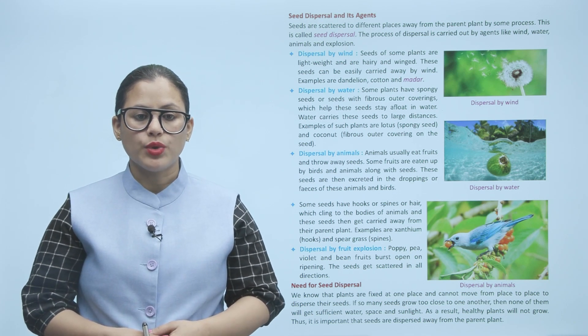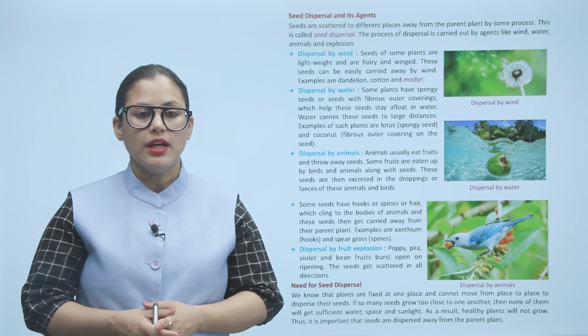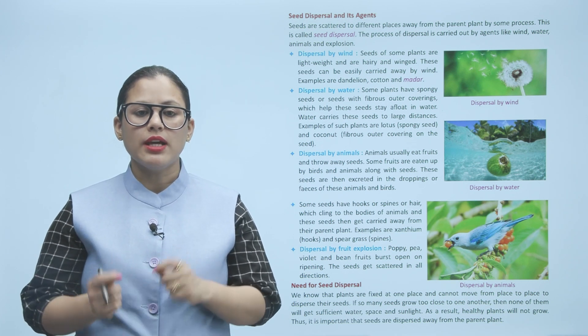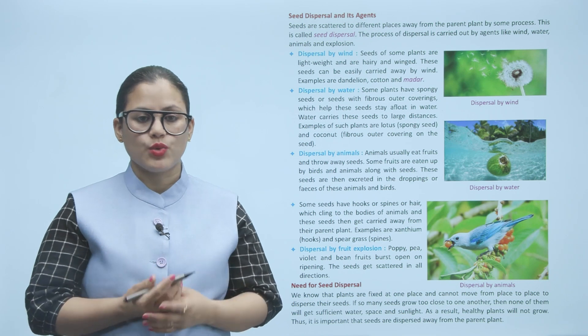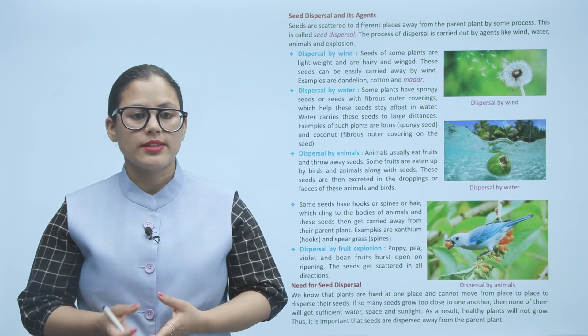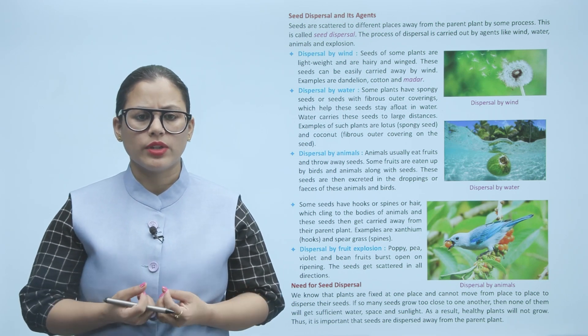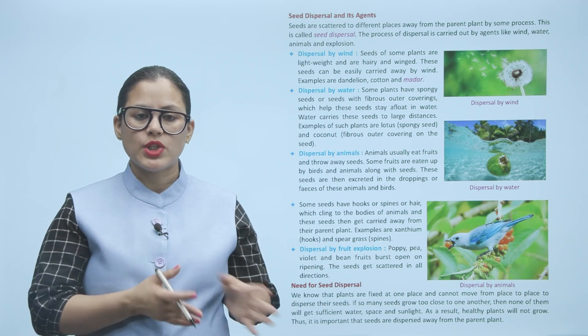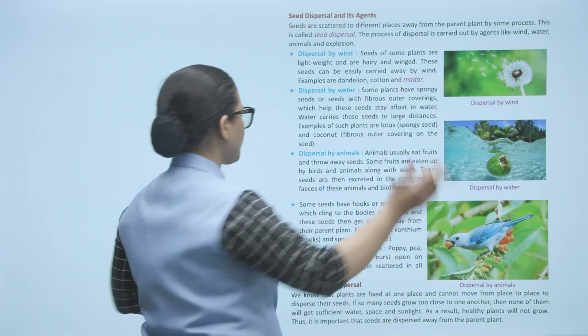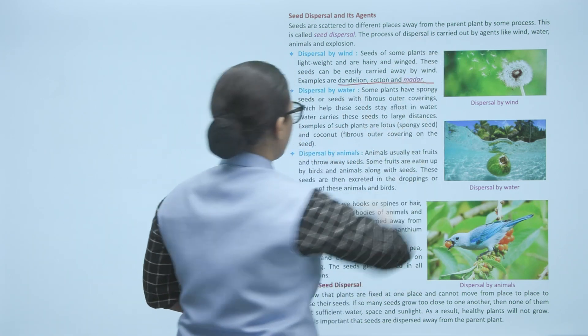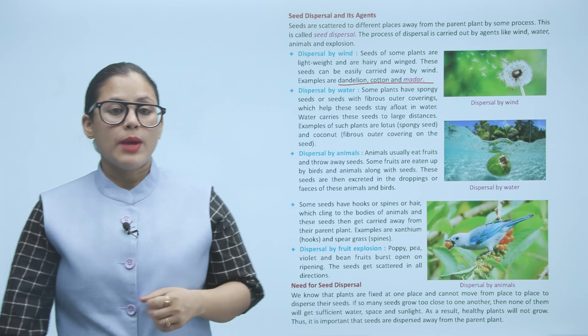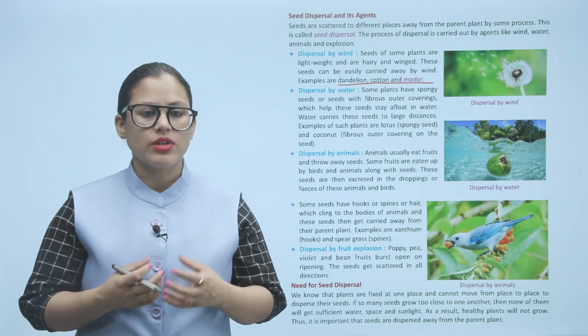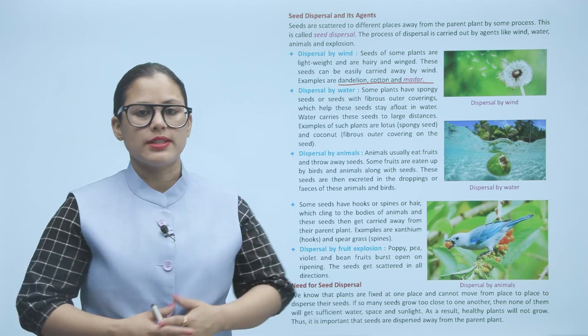Dispersal by water: Some plants have spongy seeds or seeds with fibrous outer coverings which help these seeds stay afloat in water. Water carries these seeds to large distances. Examples of such plants are lotus with spongy seed and coconut with fibrous outer covering.